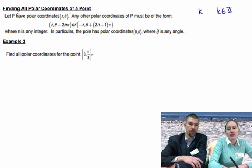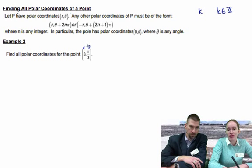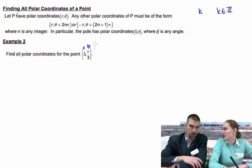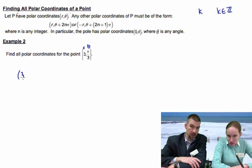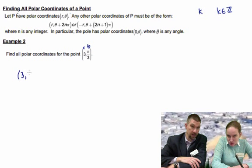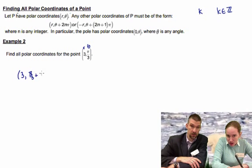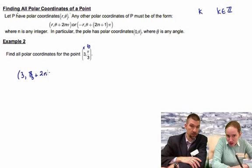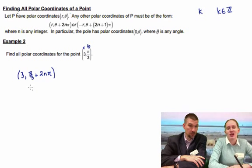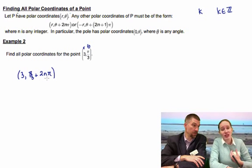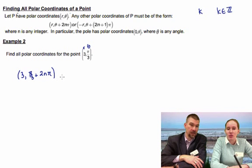We want to find all the polar coordinates for the point (3, π/3). Remember, this is R and θ — we just plug it into these. So the first form would be (3, π/3 + 2nπ). You could look at that and think, can I simplify it? We can get a common denominator, but that's not actually very helpful — it's more work.